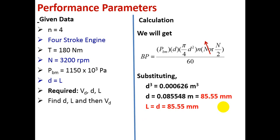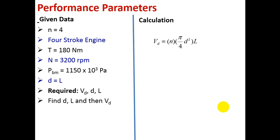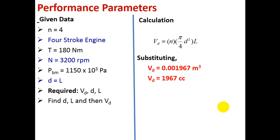Now diameter and length are known. We can find the displacement volume. The formula is VD = N × (π/4 × D²) × L, where N is the number of cylinders = 4. Substituting all values, VD = 0.001967 m³. Displacement volume is usually expressed in CC, so the CC value is 1967 CC.